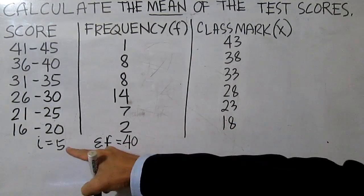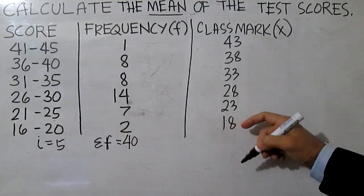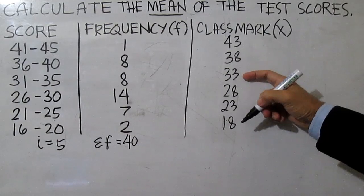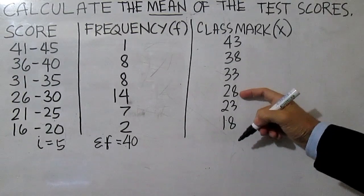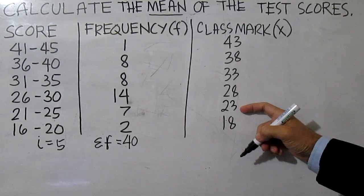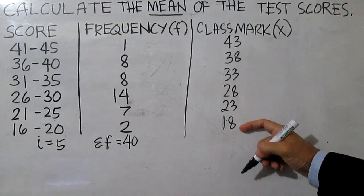Remember that our class width is 5. 43 minus 5 is 38, minus 5 is 33, minus 5 is 28, minus 5 is 23, minus 5 is 18.